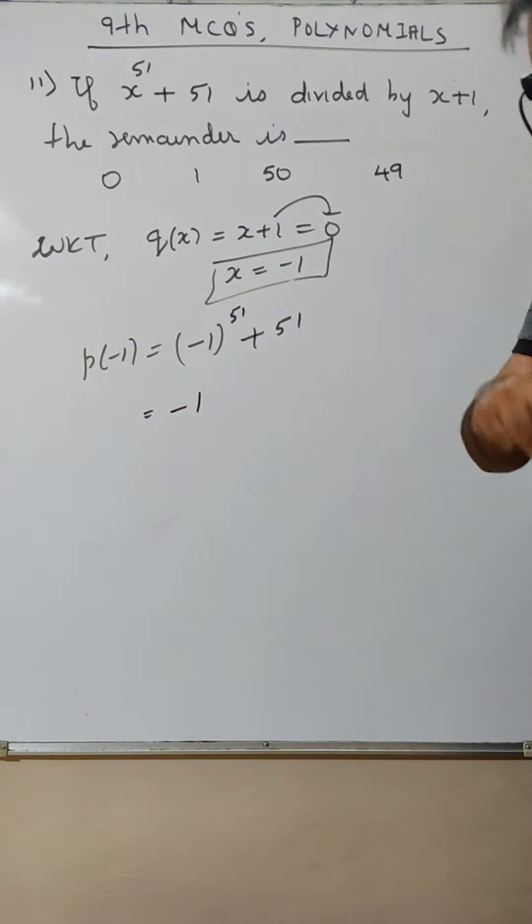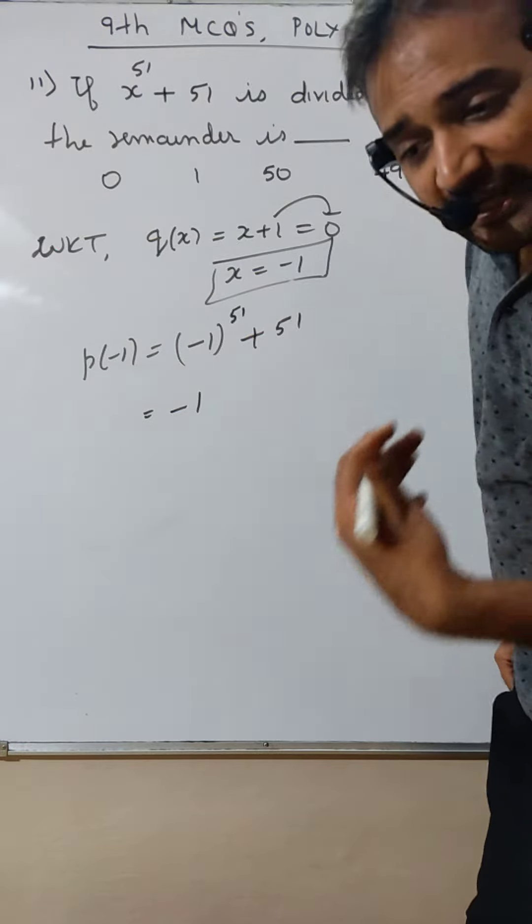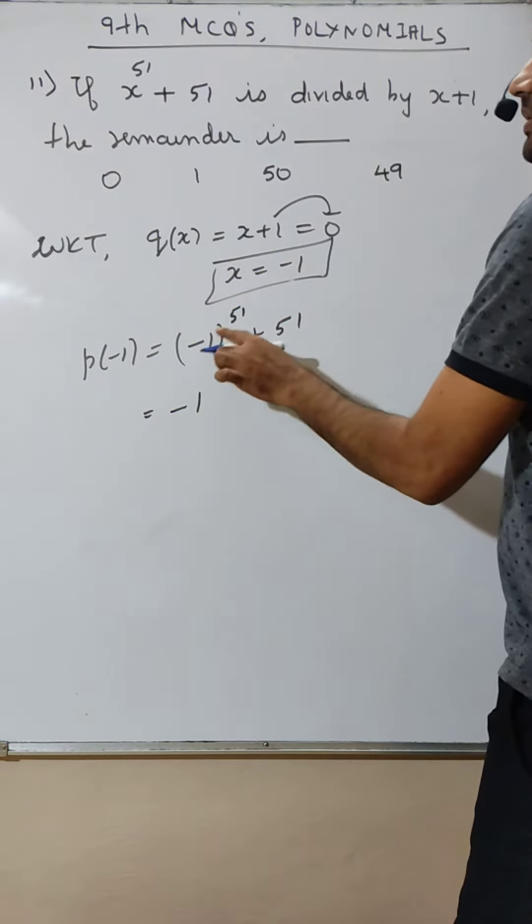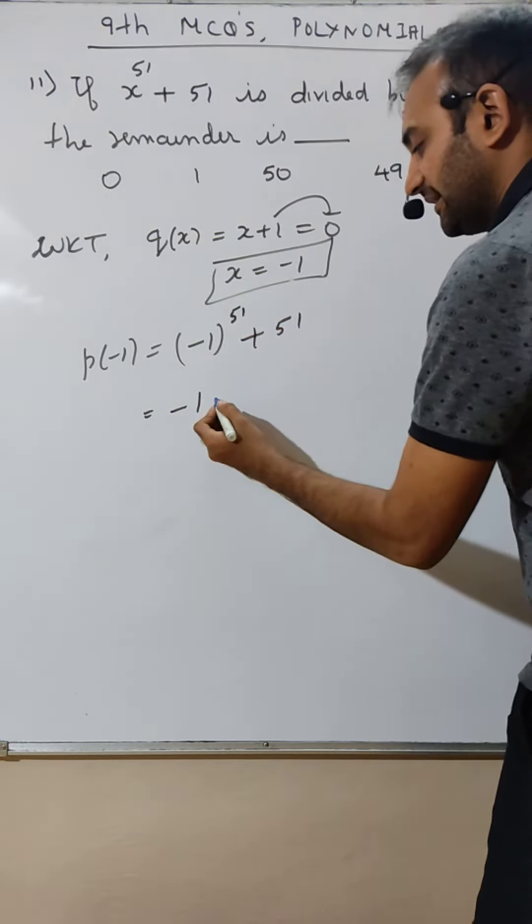I repeat, third time: negative ka odd power is negative. And 1 raise to anything is 1 only. But negative, because odd power is there, therefore negative.